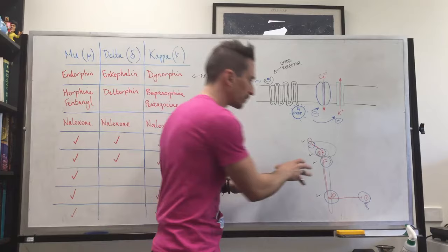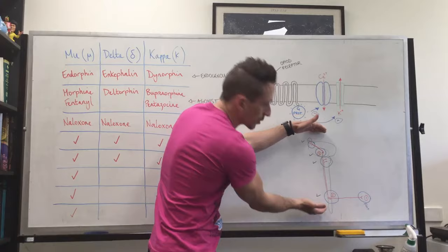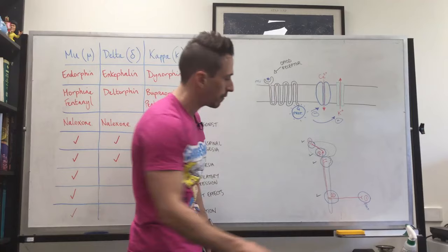Where do opioids work? Opioids work predominantly in the central nervous system. They don't have a very good effect at my foot where the pain started, but have a great effect in the central nervous system: spinal cord, brain stem, cortex, and thalamus.